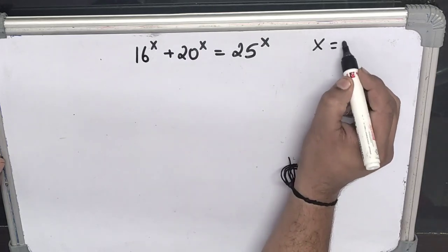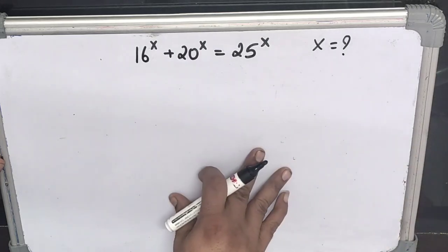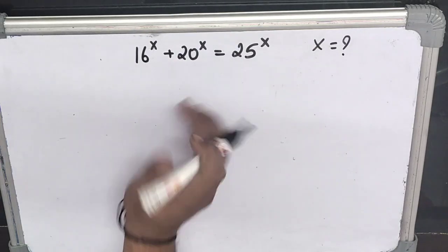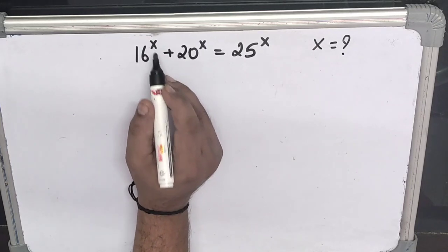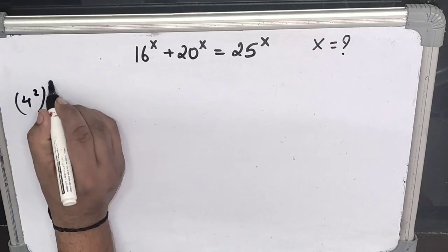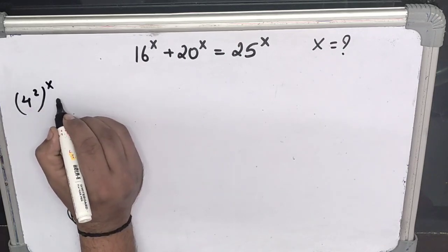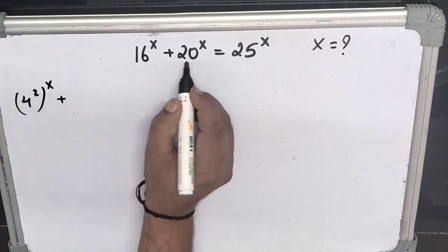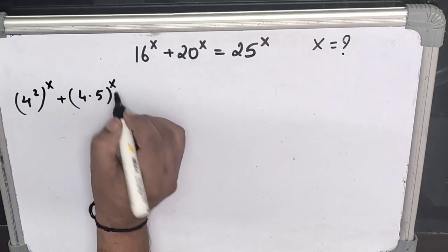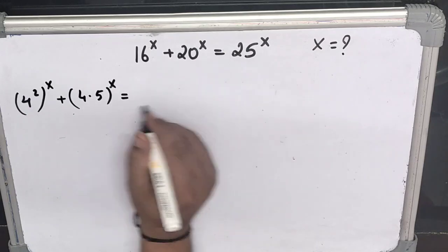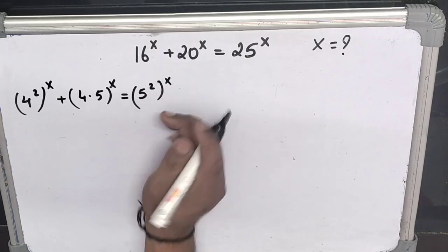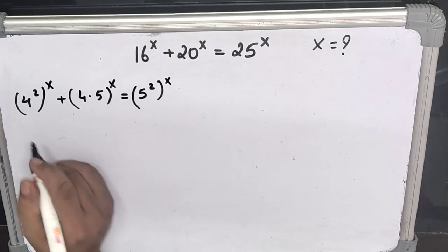We have to find the value of x. In this equation, 16 can be written as 4 squared, so we get 4 to the power 2, to the power x. The 20 can be written as 4 into 5, whole to the power x. And 25 can be written as 5 squared.